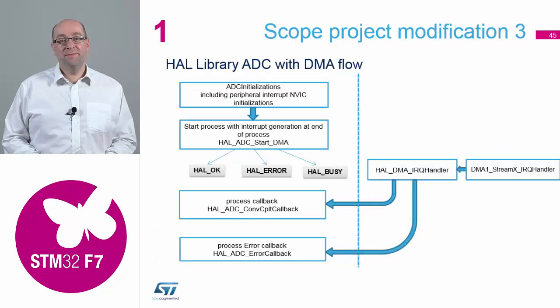The way the HAL library works, the initialization routine has been brought in when you configured it inside the CUBE tool. We've started the command, so therefore we will either get an OK, an error, or a busy. But we've also got the interrupts coming in. So when we get a conversion complete, that will trigger an interrupt. So therefore we need a process inside the main.c, which is the callback routine for the interrupt when we get conversion complete.